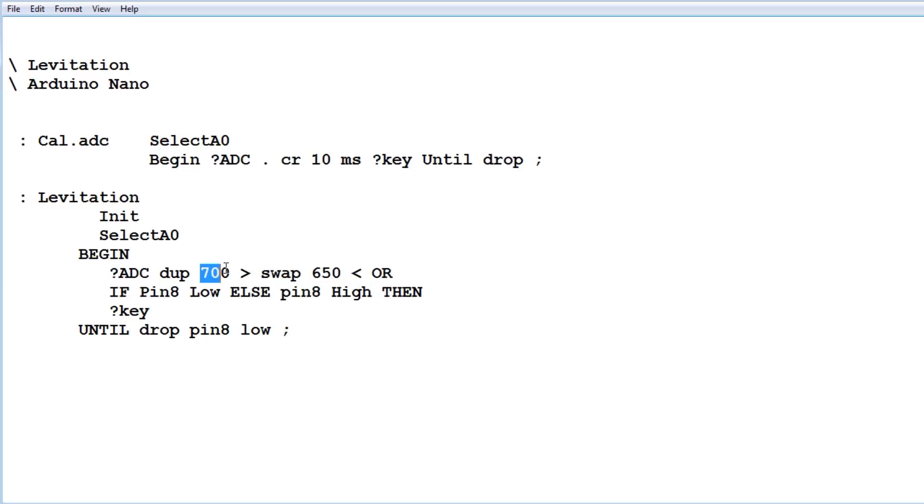So that's our trigger point, so it's going to trigger between on and off to keep the levitation point at 700, and that does it over and over again until I hit any key, and then it's going to come out of this program.